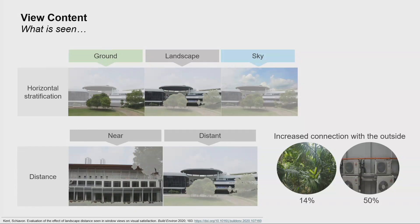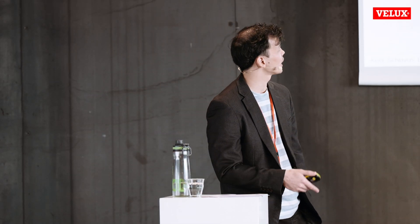View content describes what can be seen within the window view. Among different criteria, two prevalent ones emerging from research and building standards are horizontal stratification and distance. Horizontal stratification describes any view which potentially has up to three different unique layers, ranging from the ground, landscape, and sky. Views that have all three of these layers tend to be associated with a higher level of view quality.